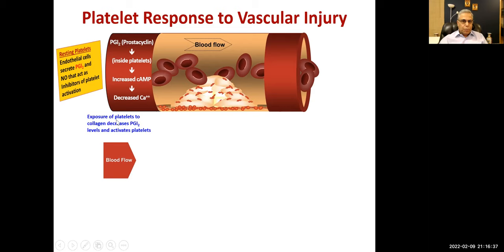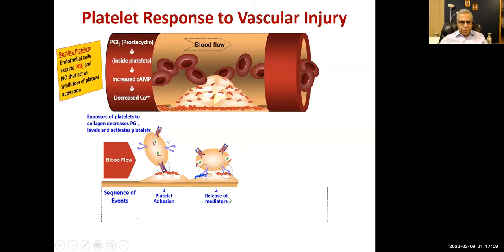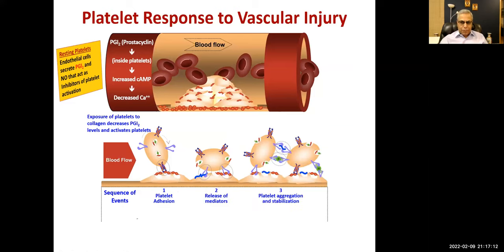Exposure of platelets to collagen decreases PGI2 levels and activates platelets. When there is exposure, the following sequence takes place: platelet adhesion, platelet activation — they become more sticky — they adhere to the collagen surface, and platelets release mediators. The end result is platelet aggregation, formation of a platelet plug, and stabilization of that plug.